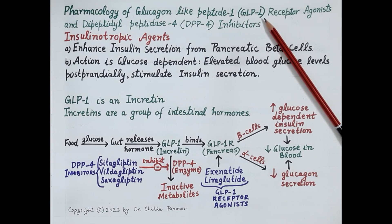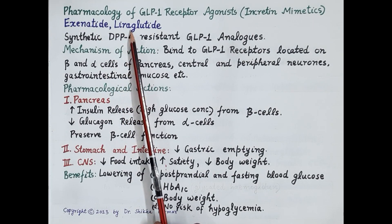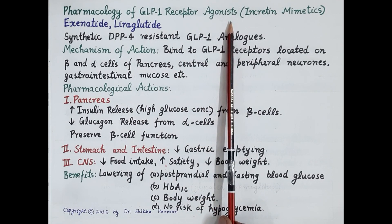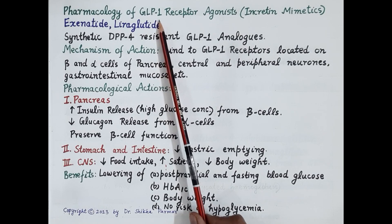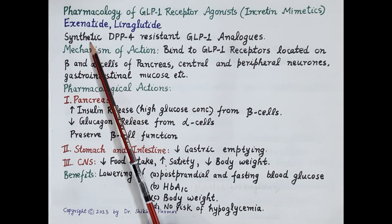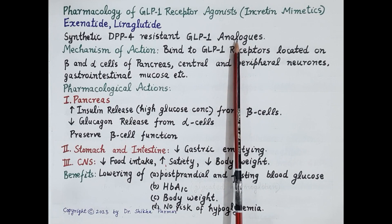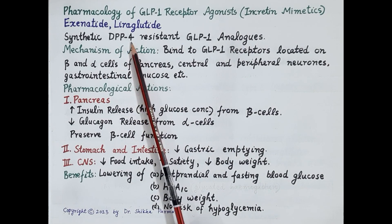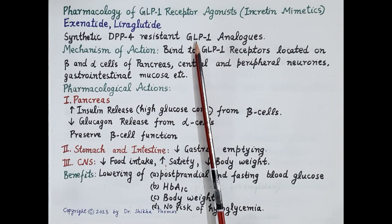Now let's discuss pharmacology of GLP-1 receptor agonist. Exenatide and liraglutide are GLP-1 receptor agonists. As GLP-1 is an incretin, these drugs are also called incretin mimetics. GLP-1 receptor agonists are synthetic drugs and are DPP-4 resistant GLP-1 analogs. That means these drugs are not broken down by DPP-4, and are termed analogs as their effects are like that of GLP-1.